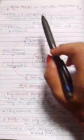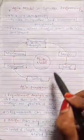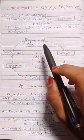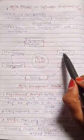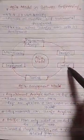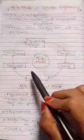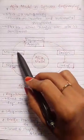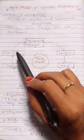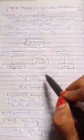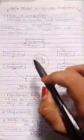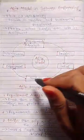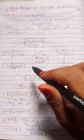In the Agile model we can see 6 phases: requirement analysis, design, coding, testing, deployment, and maintenance. I have explained all these 6 phases in a full video.